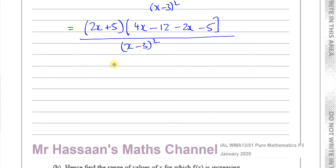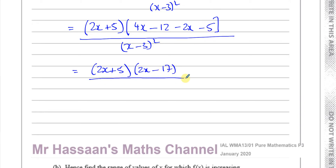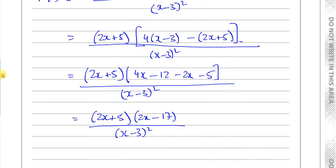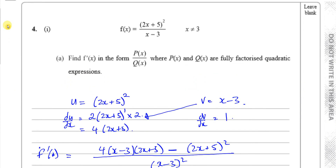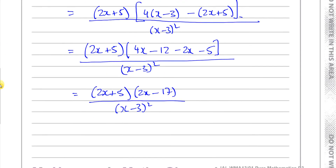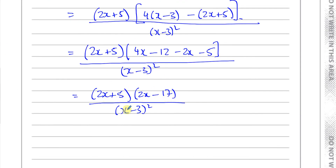Simplifying what's inside the bracket: 4x minus 2x is 2x, and minus 12 minus 5 is minus 17. So f-dash equals (2x plus 5)(2x minus 17) over (x minus 3) squared. This is how they wanted it — p of x and q of x are fully factorized quadratic expressions.